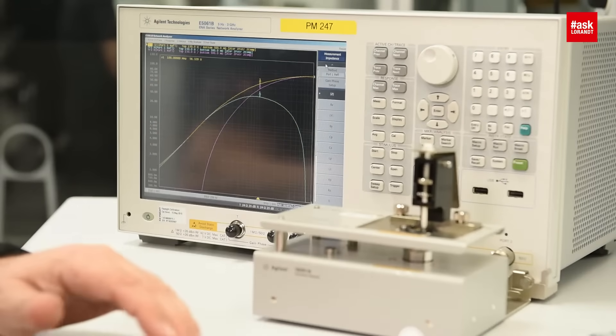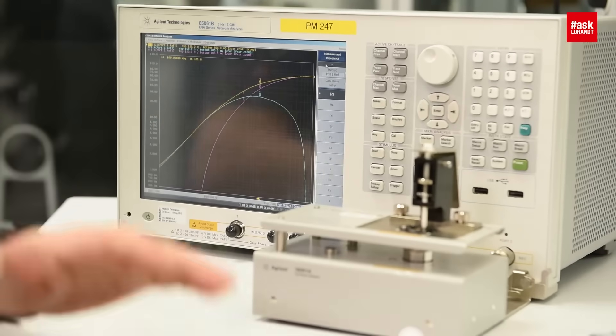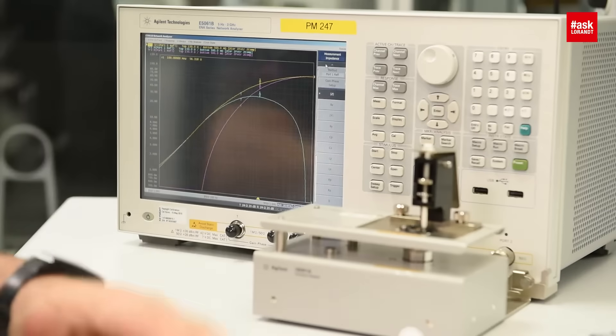You will see these three different graphs, which are showing the XL value, the R value, and the impedance value as well. We scan from 1 MHz to 1 GHz.